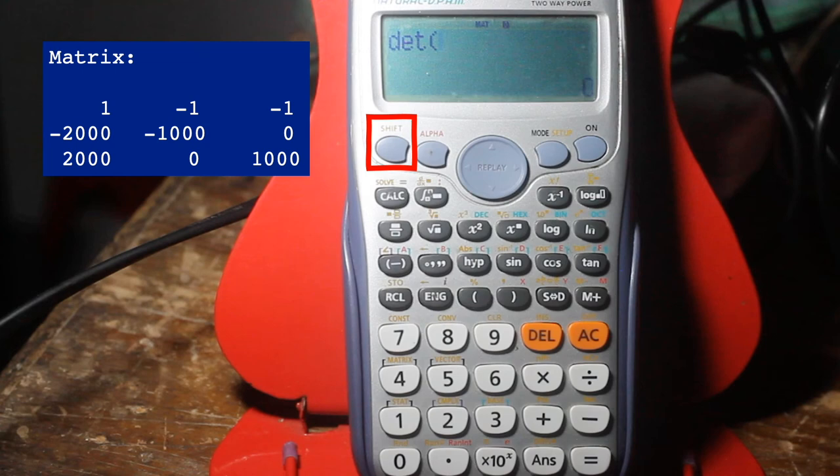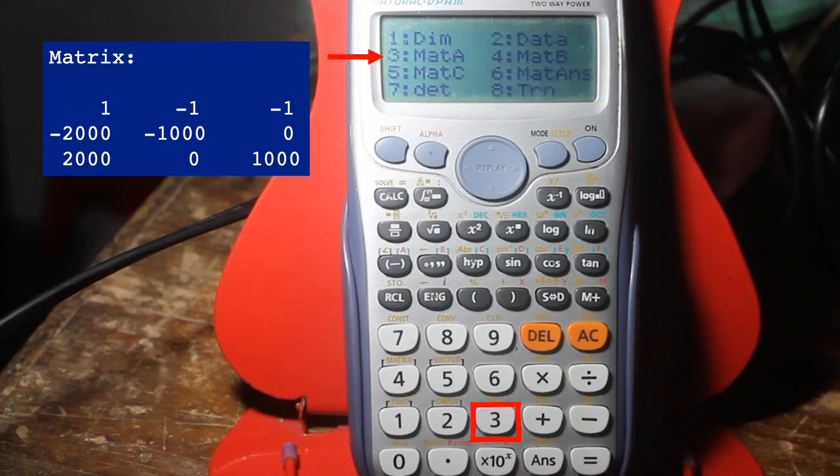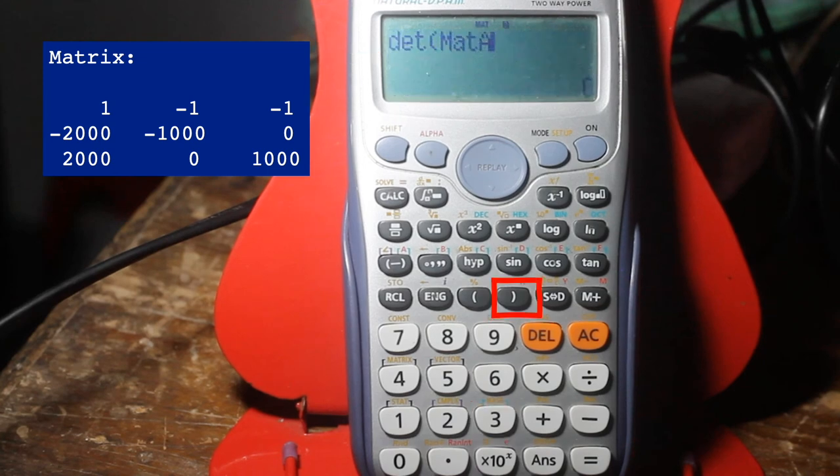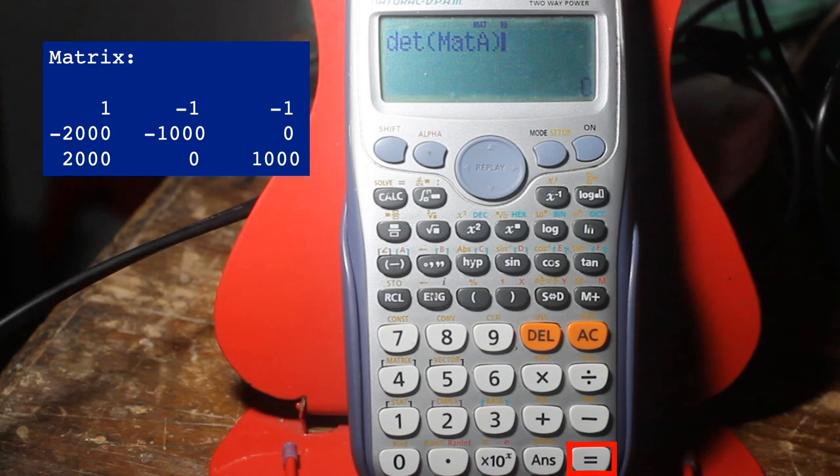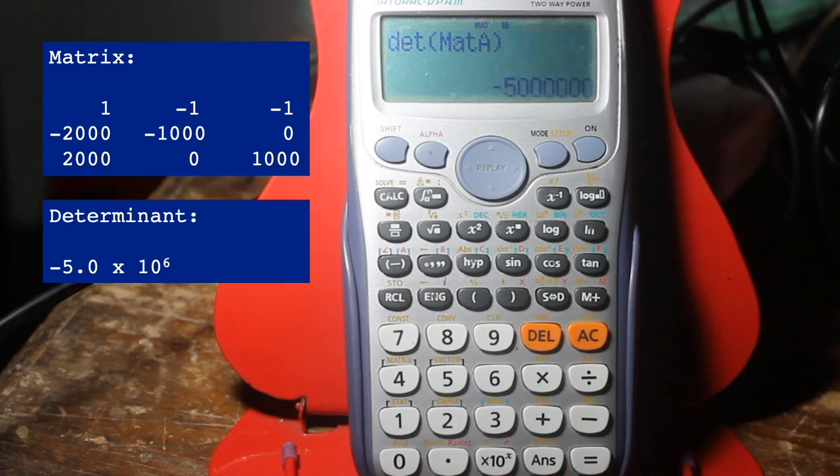Load the matrix by clicking Shift. And then matrix again by clicking 4. Load matrix A by clicking 3. Click close parentheses. And then press the equal sign button. The resulting value is the determinant of the given matrix.